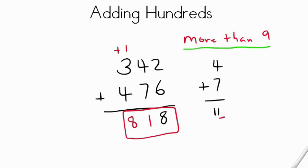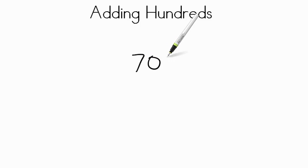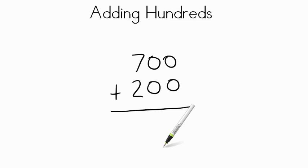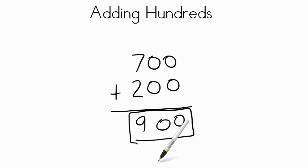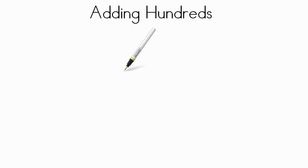Let's try another. I would like you to add 700 plus 200. What do we first add? That's right, we add the ones. If you got 900, pat yourself on the back. We have no ones, so that's still a zero. No tens, zero. Seven hundreds plus two hundreds, nine hundreds. Or a sum of 900 as your total. Nice work.